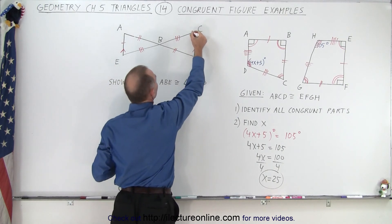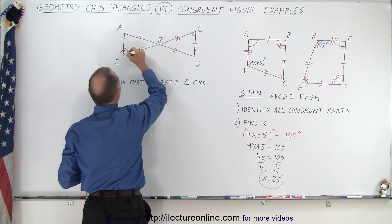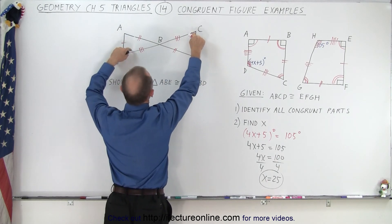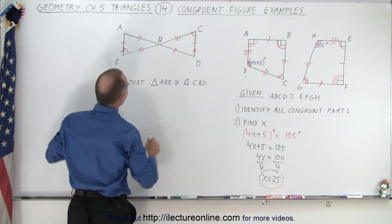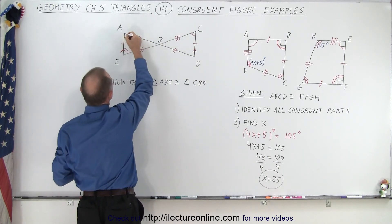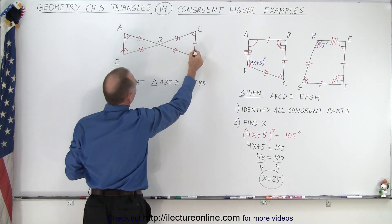In other words, this angle must be the same as this angle, because these two sides are the same. Here's the transversal. So the alternate interior angles must be congruent. We can then look at these two angles and also say that those angles must be congruent, because they're alternate interior angles.